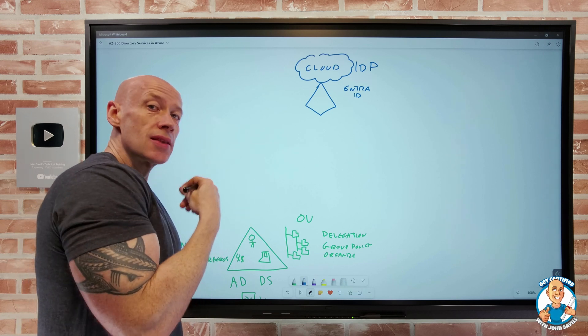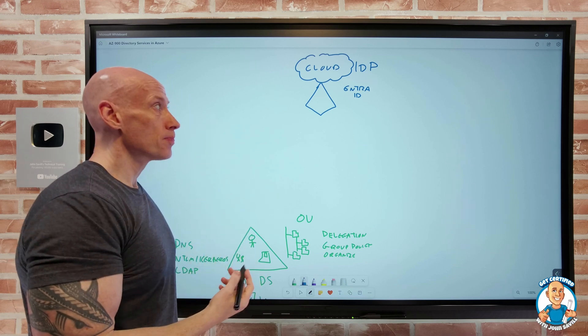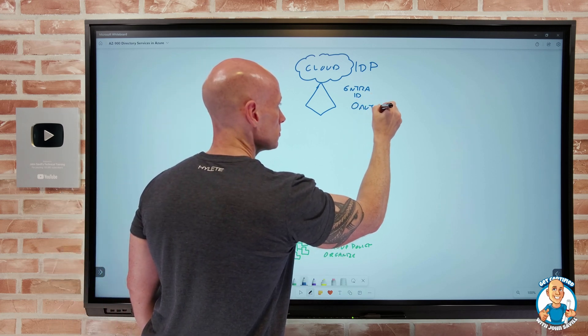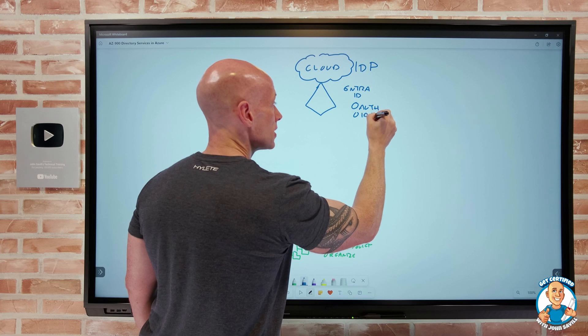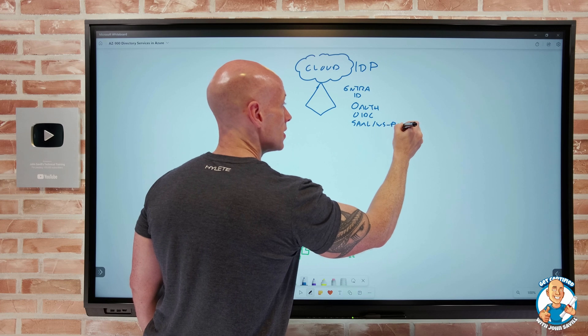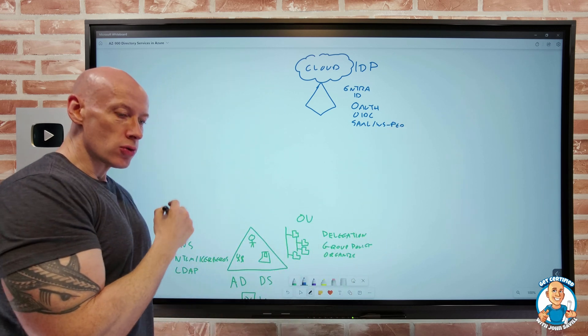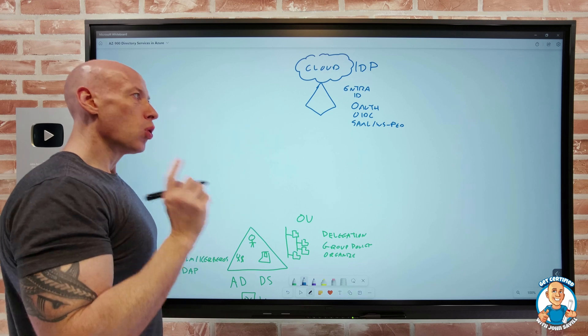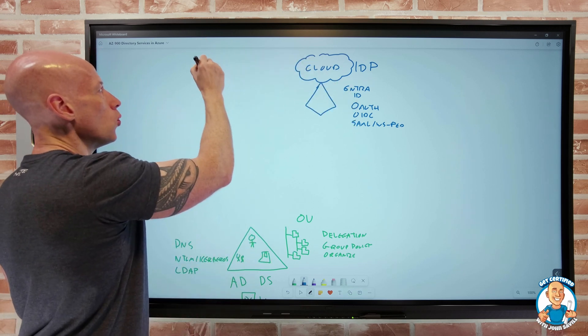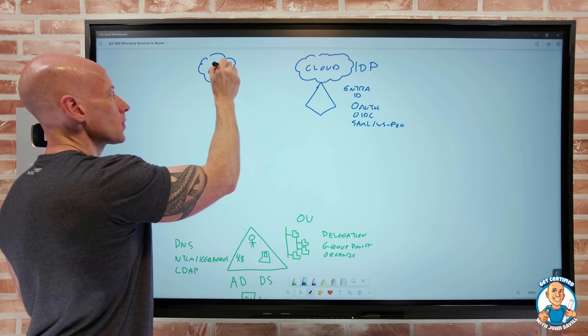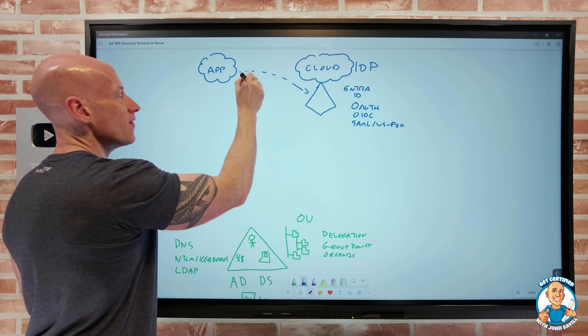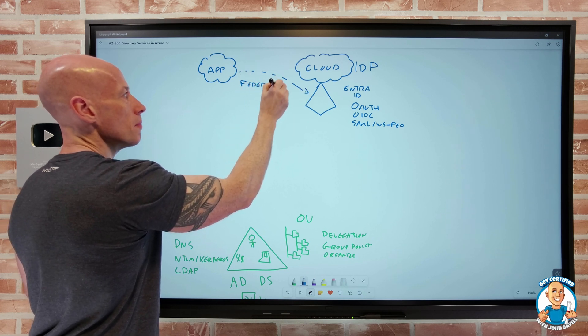Now, the whole point here is it's designed to speak cloud. We're speaking things like OAuth, OpenID Connect, SAML, WSFED. It's all around those cloud-based authentications. And the point is, because it's a cloud identity provider, think of all the different apps that exist out there. Well, all of those apps I can federate with my particular instance.